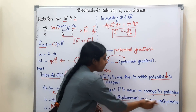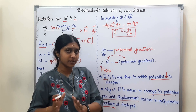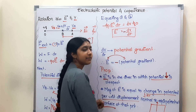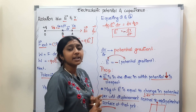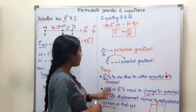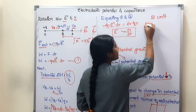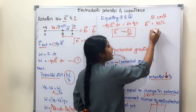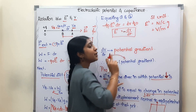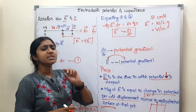The electric field is perpendicular to the equipotential surface — it acts in a direction perpendicular to the equipotential surface. Regarding SI units: the general unit of electric field is Newton per coulomb, which is also equal to Volt per meter. These two units are equivalent.